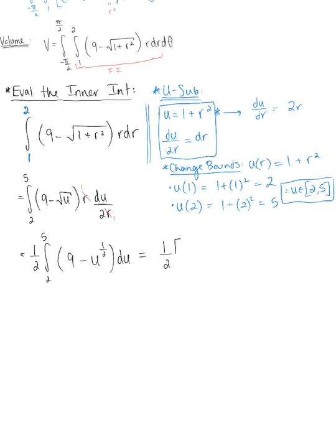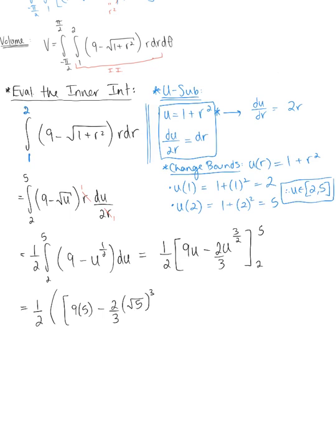Integrating, we get 1/2 multiplied by 9u minus u to the 3/2 times the reciprocal of the exponent, which is 2/3, evaluated from 2 to 5. Substituting in 5 first, we have 9 times 5 minus 2/3 times the square root of 5 cubed. Note that you could also compute 5 cubed and then take the square root — whichever you find easier.